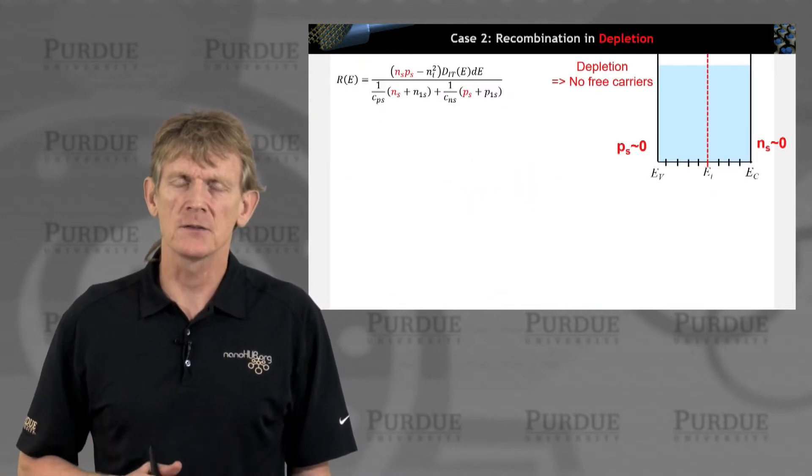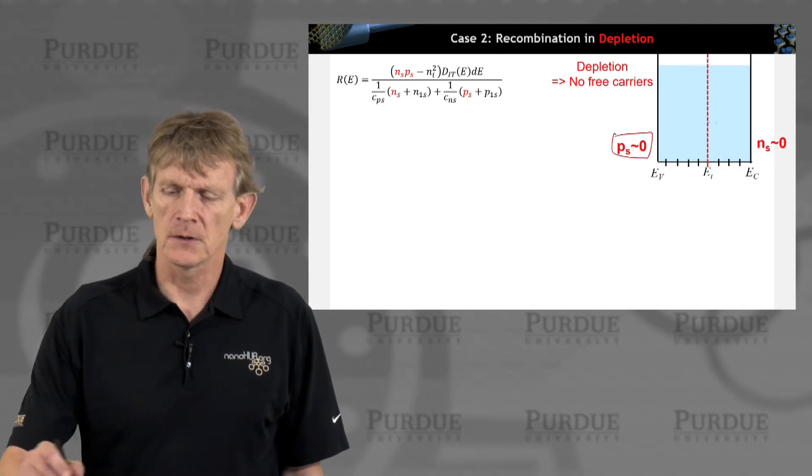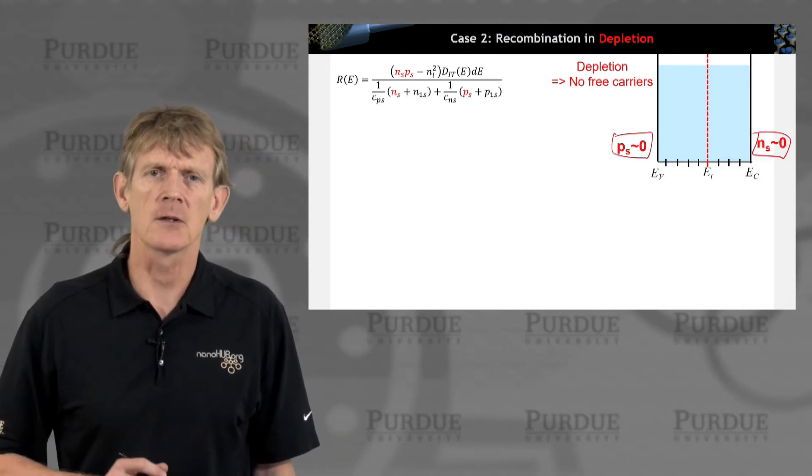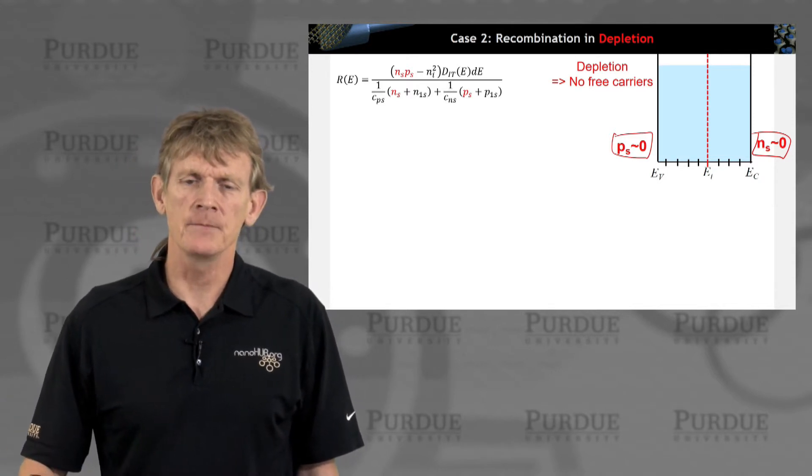Depletion means no free carriers. So Ns equals zero and Ps equals zero. Let's plug those numbers in.